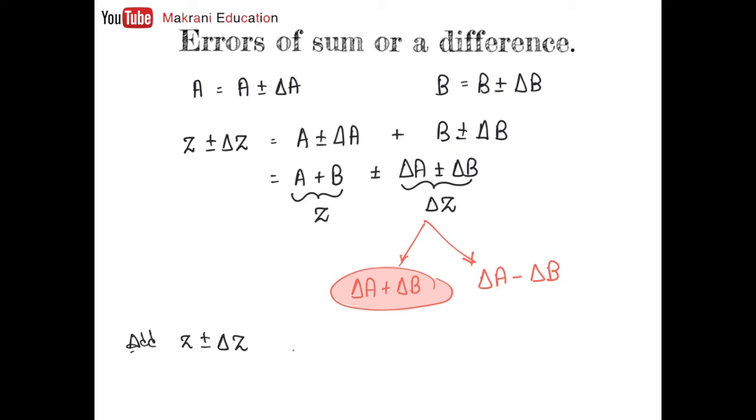For addition, the situation would be A plus B plus or minus delta A plus delta B. And for subtraction, Z plus minus delta Z that is resultant of subtraction will always be A minus B plus or minus delta A plus delta B. In both the situations, your error part should always be an addition. Thank you.